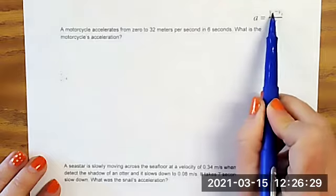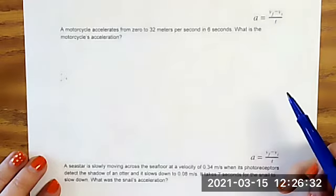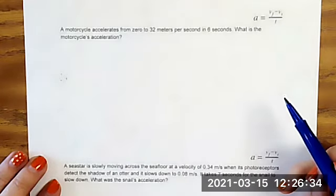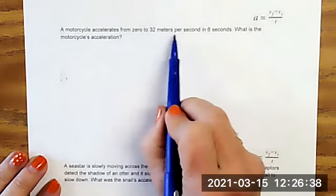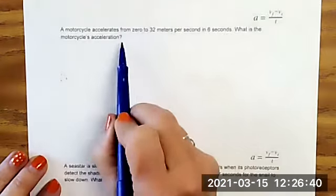So remember that we put the final velocity before the initial velocity in this problem. All right, so a motorcycle accelerates from zero to 32 meters per second in six seconds. What is the motorcycle's acceleration?